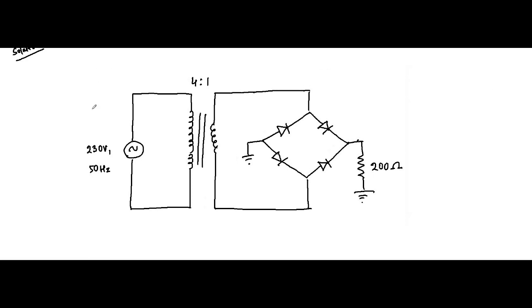The turns ratio is 4:1. This is the primary winding and this is the secondary winding. It is a step-down transformer — in electronic circuits, step-down transformers are used. NP by NS is 4 by 1. The RMS voltage of the primary winding is 230 volts.